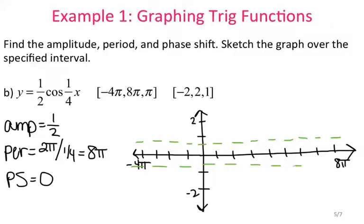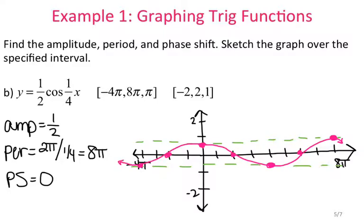My amplitude is only one-half, so it's going to be a pretty small graph in terms of height. Positive one-half and negative one-half mark the amplitude. Cosine starts and ends at your positive amplitude over the course of a period, so with no phase shift we start at the positive amplitude. The period is 8 pi, so it ends there. Cutting in half puts us at the negative amplitude at the midpoint. Cutting in half again gives us the zeros. That creates one cycle; I can continue the pattern to get the other side, graphing throughout the entire interval from negative 4 pi to 8 pi.